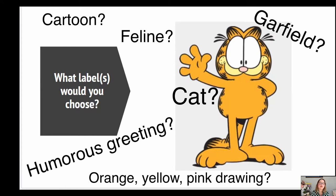What we end up doing — and this is something that is very traditional in information science — is we find the canonical. We figure out: everybody uses all these different words for something, but what are we all going to agree to call this? That's what our preferred label is. I'm not saying we get rid of the official real term for something. We still do need that, or else we would have chaos and we would never be able to find anything.